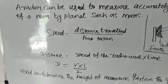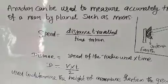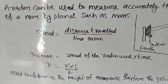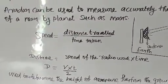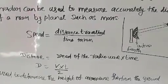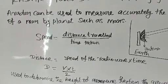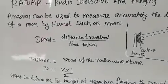With the help of this equation, we find the distance of nearby planets, at which height the aeroplane flies, and the depth of the sea.